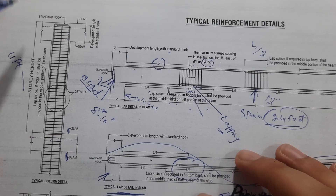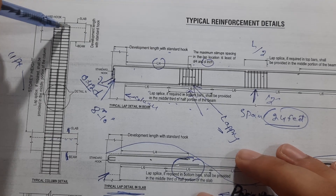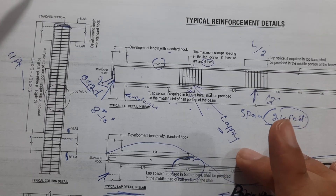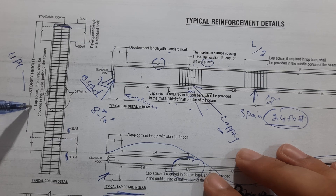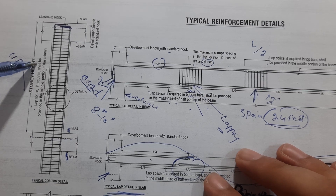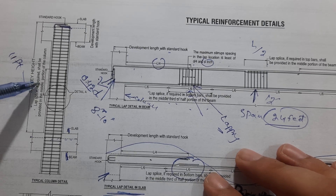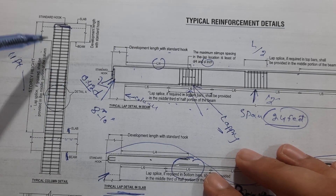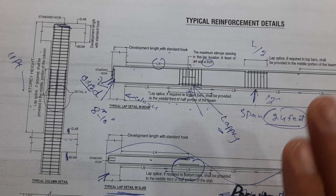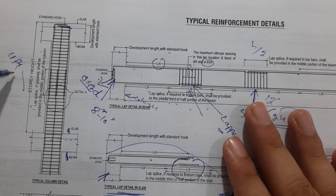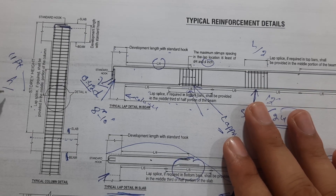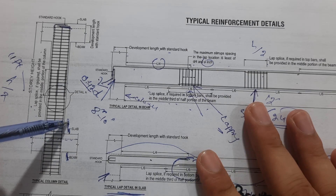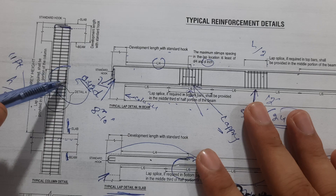Development length should be provided at the top, since there is no other floor above. Lap or splice if required shall be provided at the middle portion of the column. For example, if the height is 11 feet, provide the lapping at 5.5 feet, which is h/2. Do not provide lapping at the top or bottom, as there are more chances of cracks at those locations.